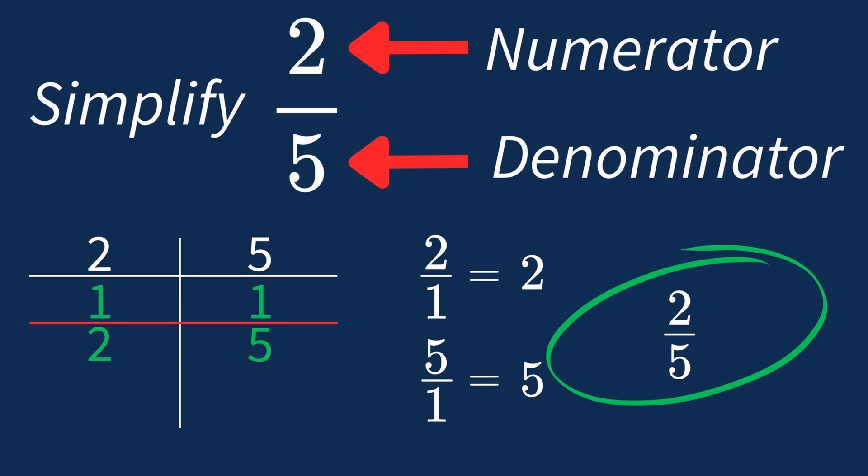And as a general rule, if the highest common factor between the numerator and denominator is 1, the fraction is already in its simplest form, so no further division is necessary.